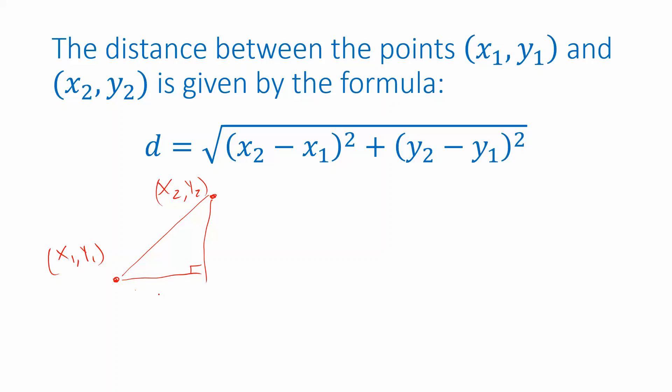The base of this triangle is the difference between the two x-coordinates of these points. That difference is x2 minus x1. The height of this triangle is the difference between the y-coordinates, so that difference is y2 minus y1.